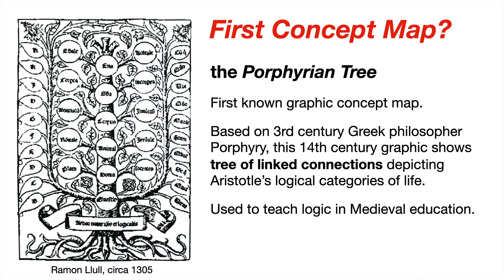Let's look at a really old — maybe the very first — concept map, called the Porphyrian tree. This is a 14th-century graphic that depicts, through a tree structure, the categories of Aristotle's view of how living things are related to each other: animals and plants, and then within plants there'd be trees, shrubs, and flowers; within animals, mammals, birds, fish, and so on. This tree connects them in a logical way, and Aristotle's system was used to teach logic for centuries in early universities and to teach priests.